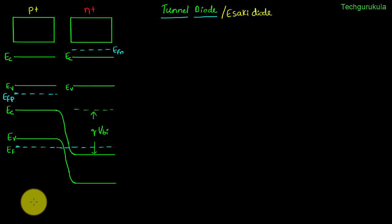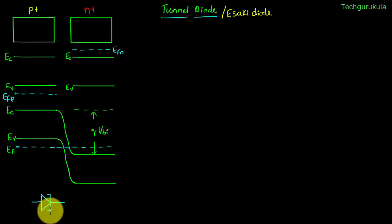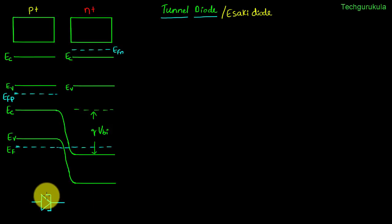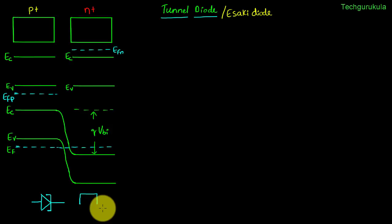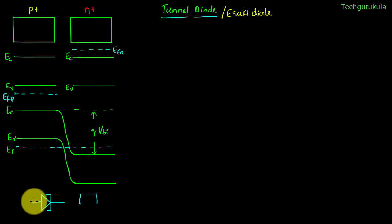The tunnel diode symbol looks like this — it almost looks like a normal p-n junction diode except that it has these two lines. The way I understand this figure: if you flip this symbol it would look like a tunnel entrance, and in general if you are traveling through a tunnel, the tunnel entrance would look like this. So when electrons are going through, it basically looks like a tunnel.